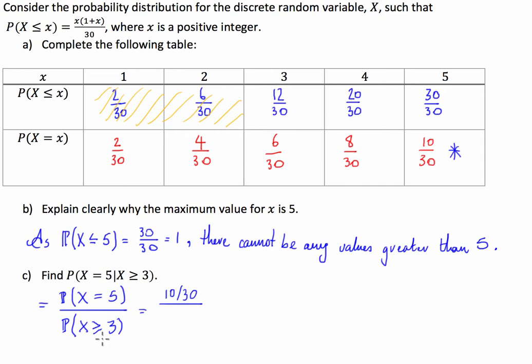So what we're going to do is we're going to say well this is going to be equal to 1 minus 6 over 30, which is equal to 10 on 30 divided by 24 on 30 which is equal to 10 on 24 or 5 on 12.